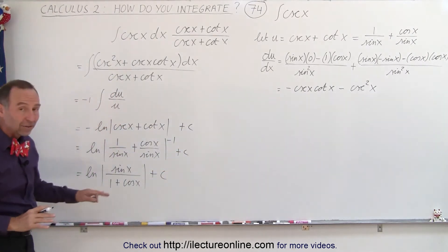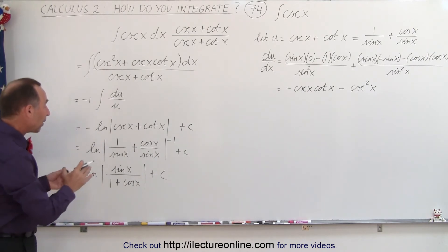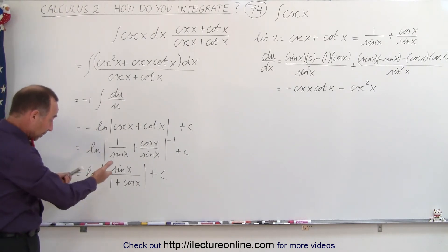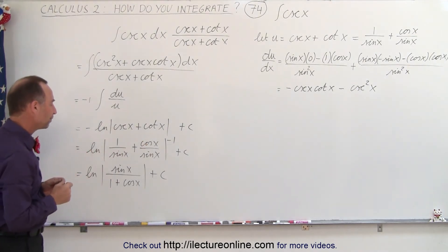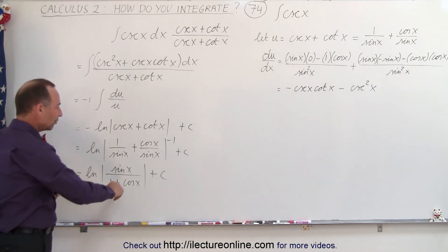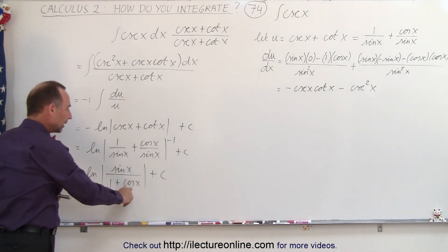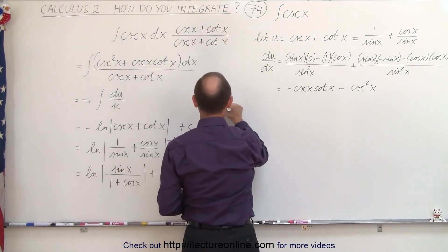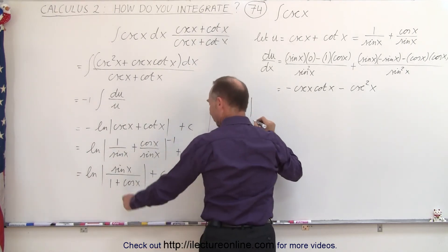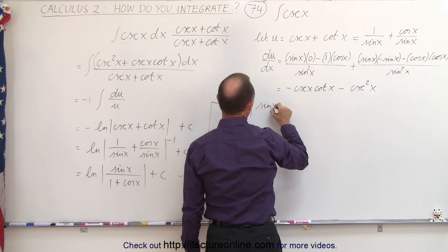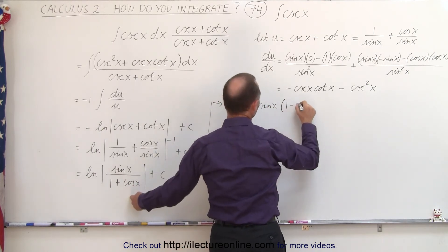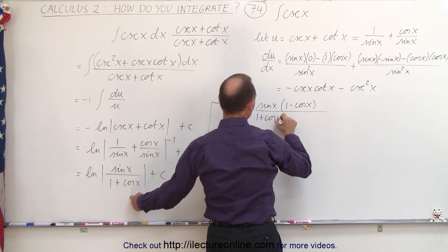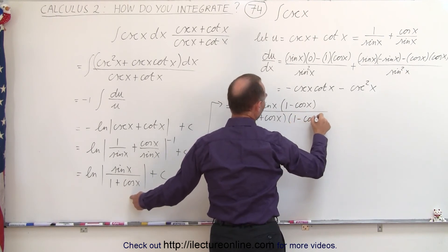Now, we could leave it like that and say we're done, but if you look at an integral table, you'll probably not see this as the result of that integral, and then you wonder, did I do it correctly or not? Well, you probably did — you just don't have the exact same format. To get the same format, what we could do is multiply the numerator and the denominator by the conjugate of the denominator. So we say this is equal to the natural log of sine of x times 1 minus cosine of x, divided by 1 plus cosine of x times 1 minus cosine of x, plus the constant of integration.